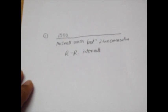This is 1500 divided by number of small boxes between two consecutive RR intervals.